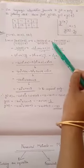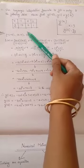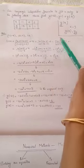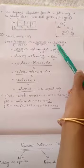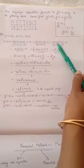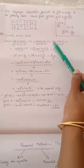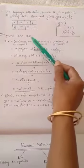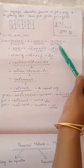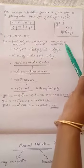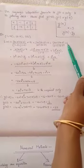The third term is obtained by hiding the third point. It is (x plus 1)(x minus 0) divided by (2 plus 1)(2 minus 0), which is multiplied with the functional value 1.